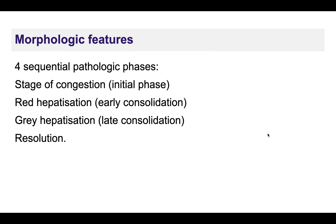Going to the morphological features of lobar pneumonia: if there is no treatment and the patient progresses toward resolution, there are four phases followed. The first is the stage of congestion, which is the initial phase. Then red hepatization, gray hepatization, and finally resolution.